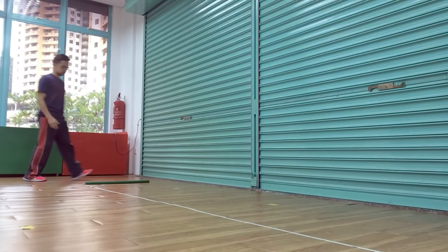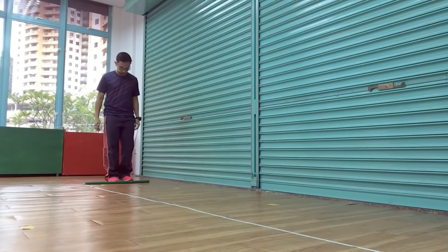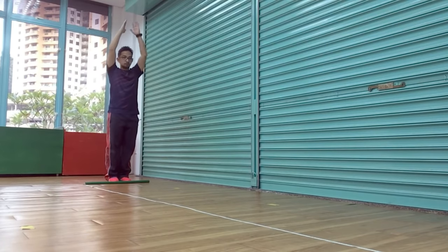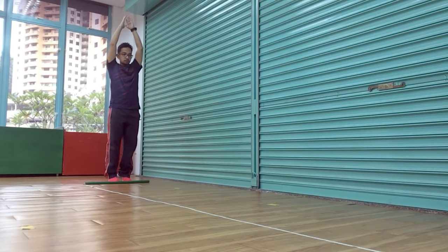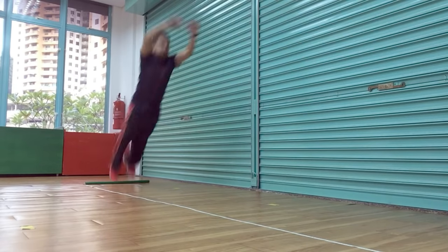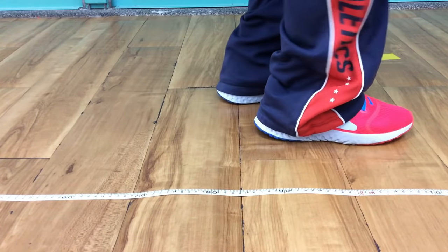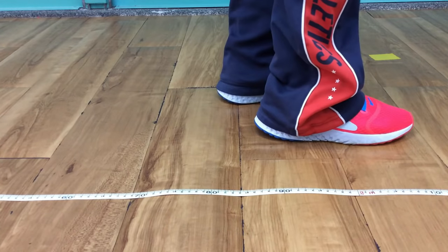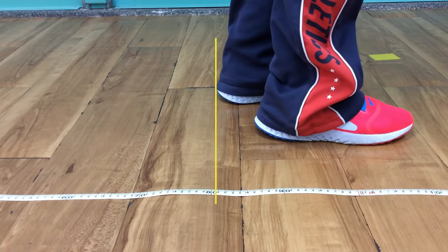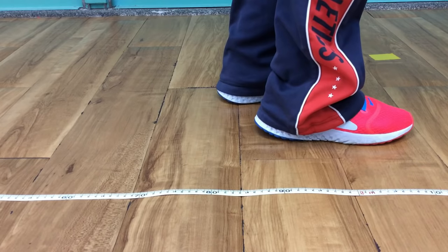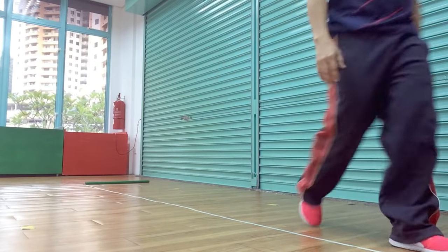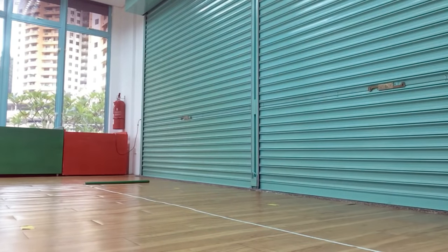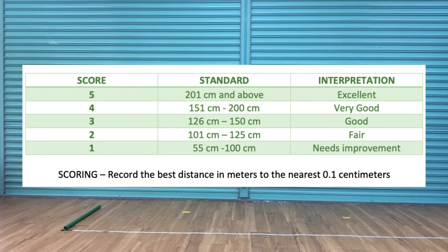For the partner or facilitator, place the zero point of the tape measure at the takeoff line. After the jump, spot the mark where the back of the heel of either foot of the tester has landed nearest to the takeoff line. Record the distance of the two trials. This is the scoring for standing long jump.